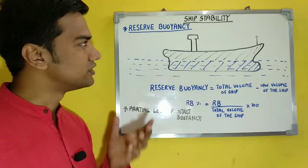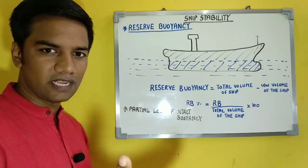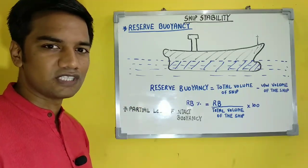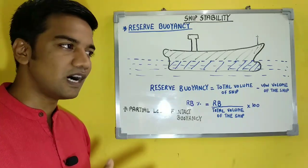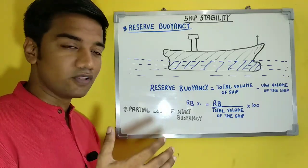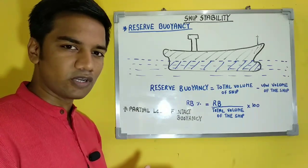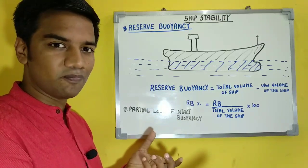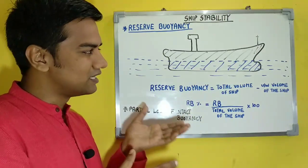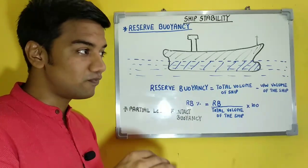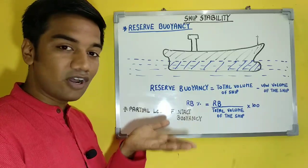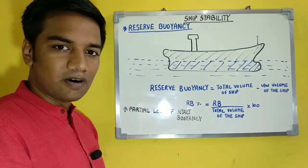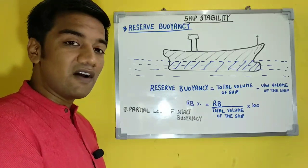Moving on to our next term: reserve buoyancy. Reserve buoyancy, from its name itself, is the buoyancy which is kept in reserve for the ship. Now, buoyancy is the upward thrust acted upon by water in order for the ship to float. When the ship is floating on water, it displaces an equal volume of water equal to its underwater volume. The underwater volume is compensating for the floating condition against the upward thrust.